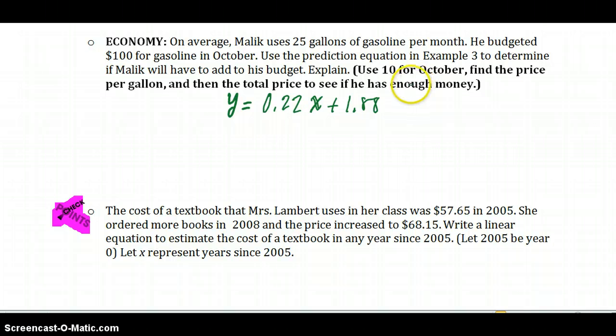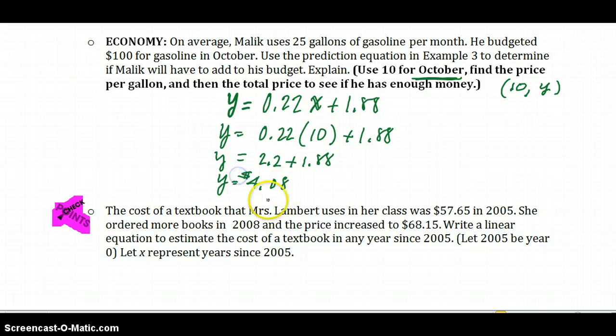Let's look at the next question that talks about gas with Malik. He uses 25 gallons of gasoline per month. He budgeted $100 for gasoline in October. Use the equation from example 3. The equation was y equals .22x plus $1.88. Now what was x? X was our month. So if we're looking at October, it's the 10th month. And we do not know our y. We do not know the cost of gasoline in October. So let's see if we can figure it out. 0.22 times our 10th month gives us 2.2 plus 1.88. So y is 4.08. So that's $4.08 per gallon. How many gallons does he need? He needs 25 gallons. So 25 gallons times 4.08. I can tell you right now that's going to be greater than 100. And so it's exactly 102. So he needs to save 2 more dollars or add 2 more dollars to his budget to stay within budget for gasoline in October.